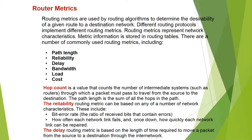There are a number of commonly used routing metrics including path length, reliability, delay, bandwidth, load, and cost. Hop count is a value representing the number of intermediate systems, such as routers, through which a packet must pass to travel from source to destination. The path length is the sum of all the hops in the path.